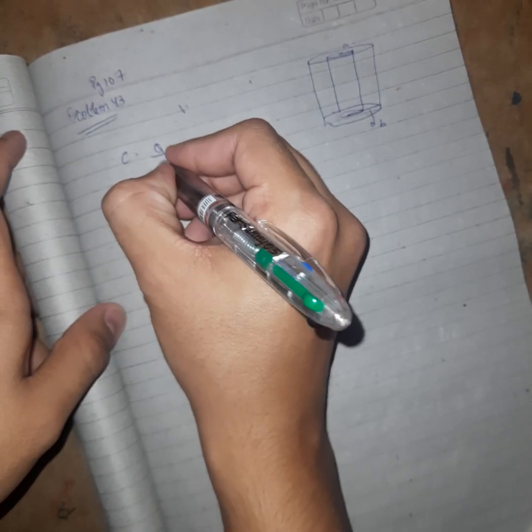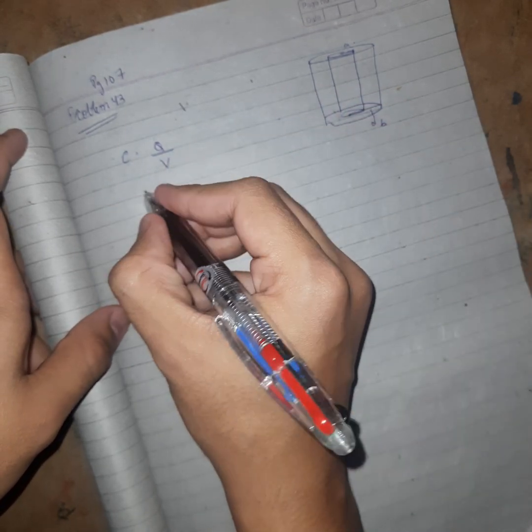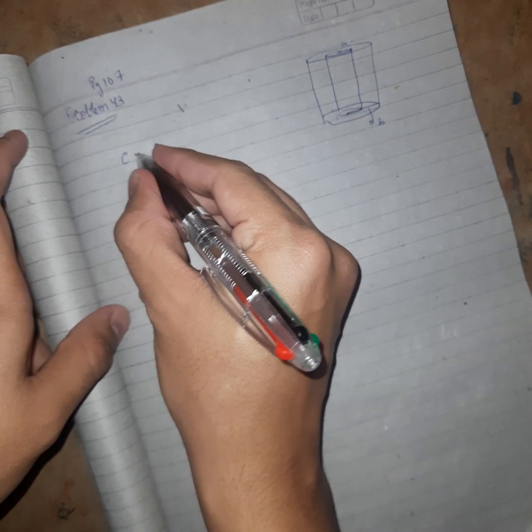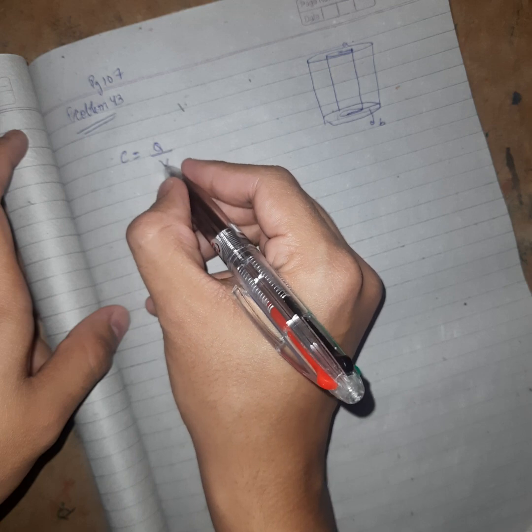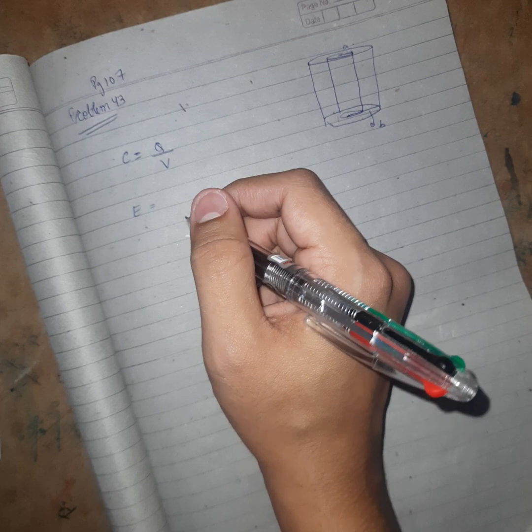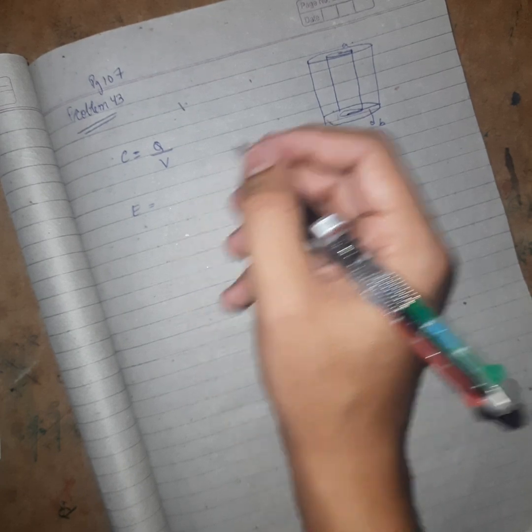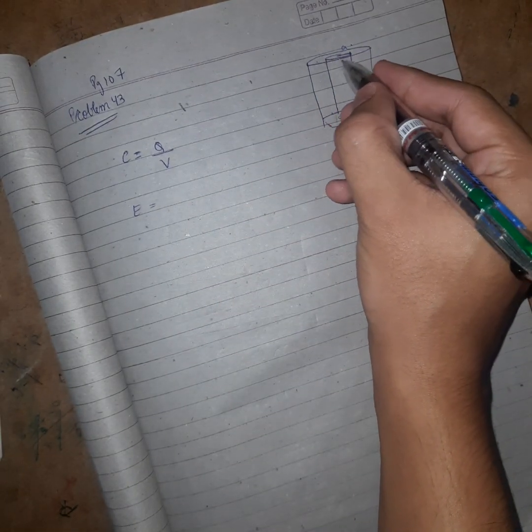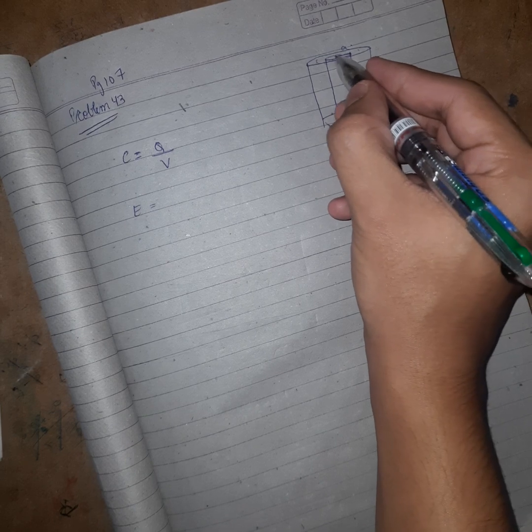So first of all, let us solve for E. E is electric field, so electric field between the cylindrical tubes.